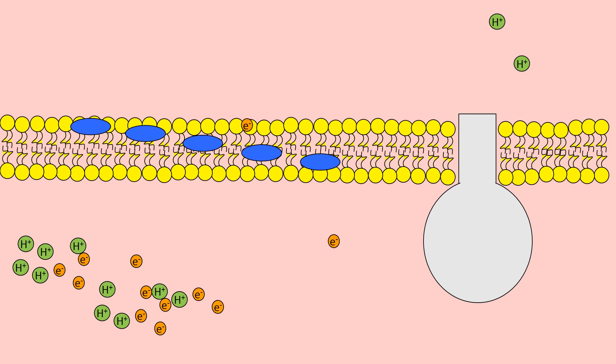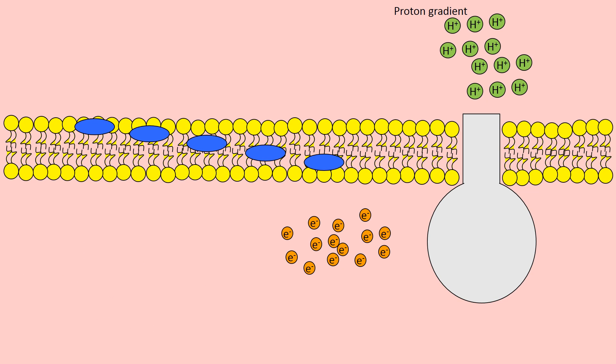What you begin to build up is a proton gradient, or sometimes referred to as chemiosmotic potential. We've built up a proton gradient. Note that we still have a lot of electrons inside the matrix.